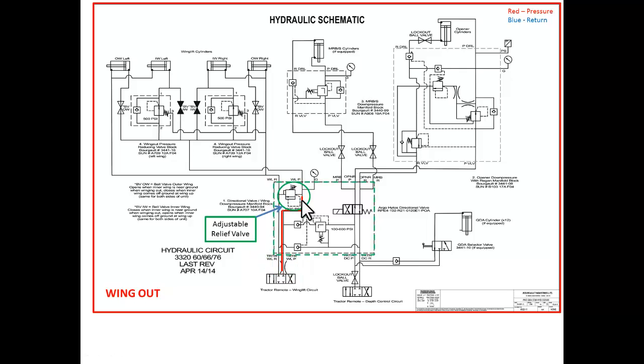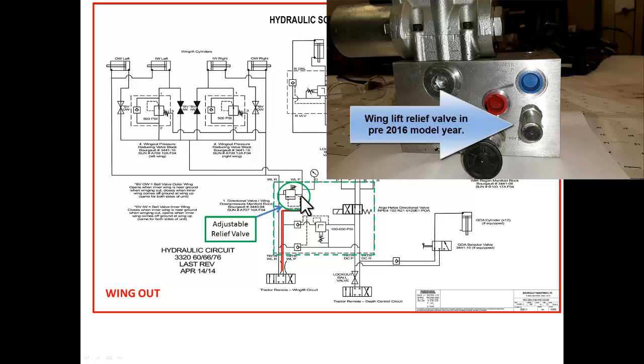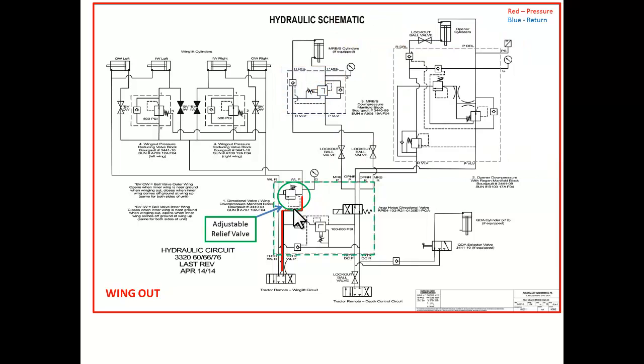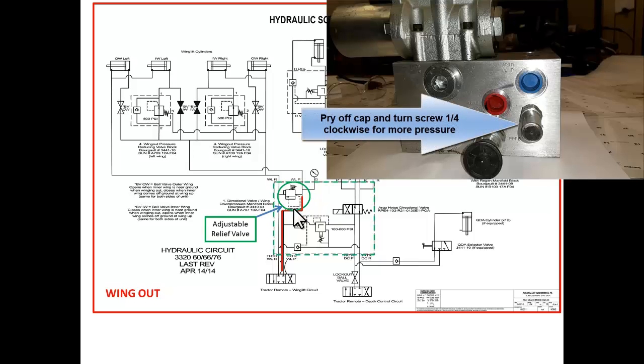Once the oil travels through the orifice, it travels to the directional control valve and then an adjustable relief. This relief valve limits the pressure to the base end of the cylinders on the wing lift side. In some cases this pressure may be too low and then the wings won't start the unfolding process. You can simply adjust the relief pressure up a little bit to start that process.